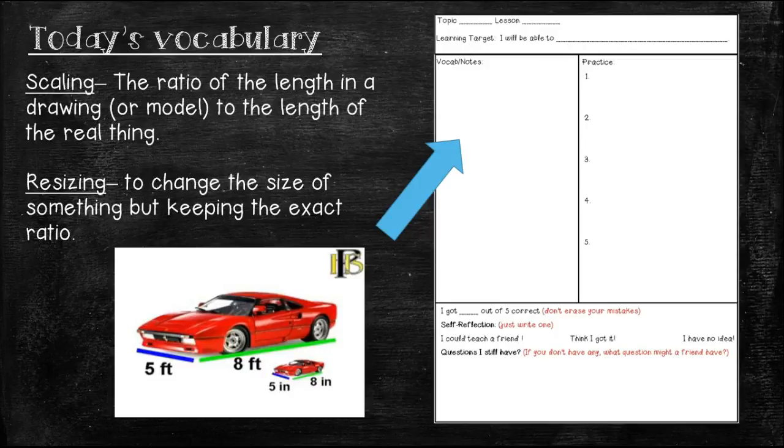Here are two of today's vocabulary words. The first word is scaling. That is the ratio of the length in a drawing or a model to the length of the real thing. For instance, if this car in reality was 5 feet wide by 8 feet long and we wanted to just do a toy model of it, we might turn it into 5 inches by 8 inches. It's going to be smaller, but it will still look exactly like this car, just a shrunken down version of it. Our other vocabulary word today is resizing. That's to change the size of something but keeping the exact ratio. Again, the car is the same, it's just a little bit smaller. And I'm going to show you today how you use multiplication to accomplish that.